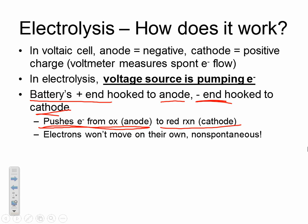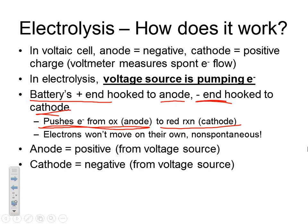These electrons are not moving on their own — they are not spontaneously going from anode to cathode. We have to manipulate the charges from the battery to force the electrons to move. The anode in an electrolytic cell is positively charged because of the voltage source, and the cathode is negatively charged because we hooked the negative end of the battery to it.